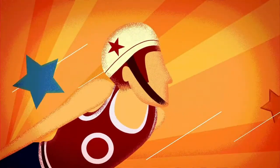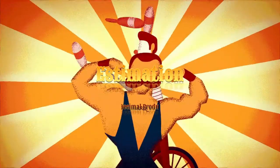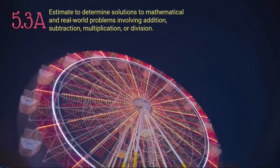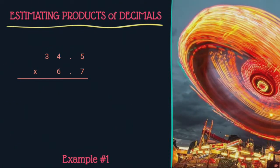In this video I'd like to talk about estimating products of decimals. Let's dive in with an example. Here I have two decimal numbers that I'm multiplying together. The thing we need to remember is we need to round to the nearest whole number. We did that with adding and subtracting; we're going to continue doing that with multiplying.